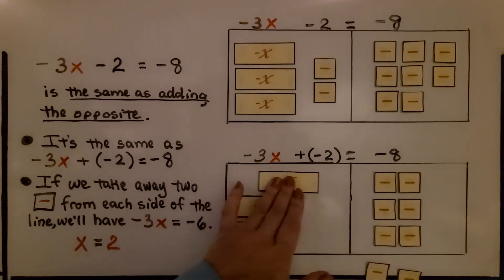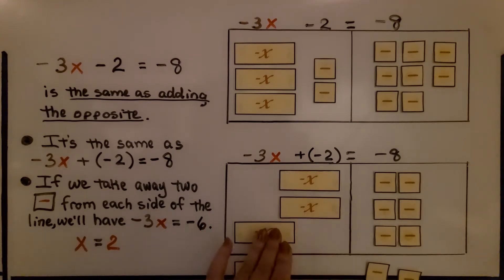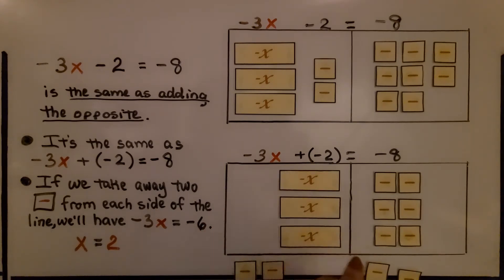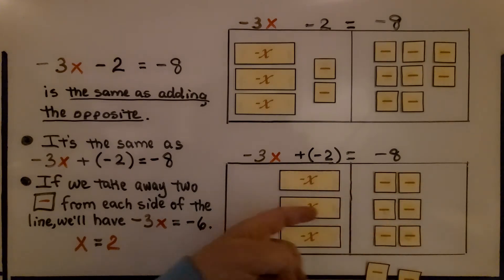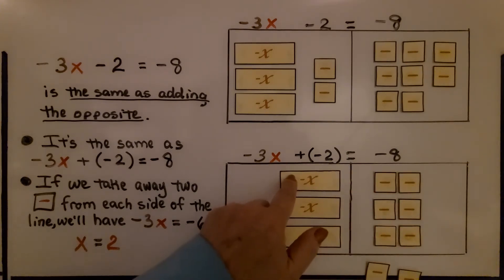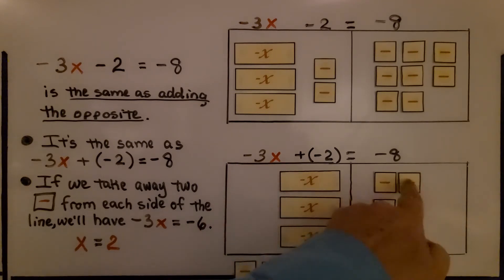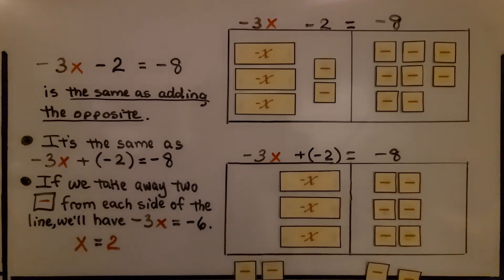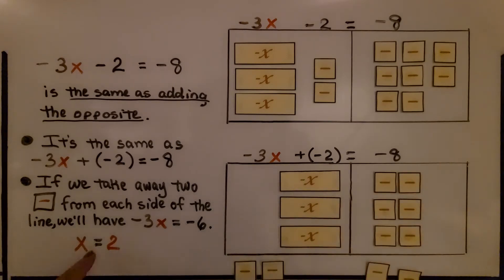If each of these tiles is matched to tiles on the other side, we can see that each negative x tile is equal to 2 of these tiles. Because that's a negative and these are negatives, it would be a positive 2. So x is equal to 2.